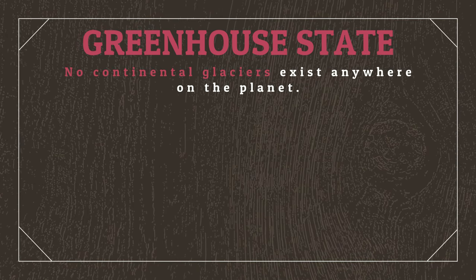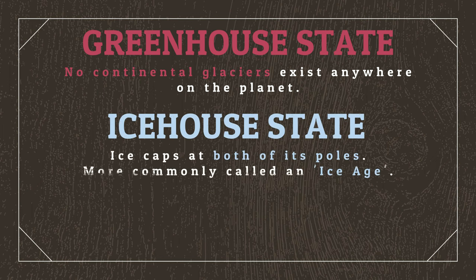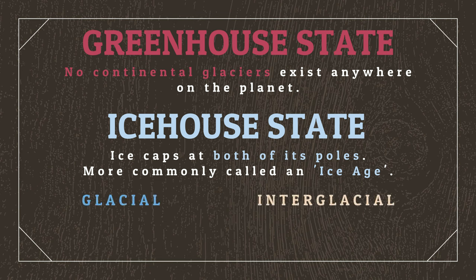While ice caps are reasonably well known to us, they weren't always present on Earth and aren't necessary for any other Earth-like planets either. Earth-like planets shift between two primary climate states: greenhouse and ice house. In short, greenhouse and ice house states refer to whether polar ice caps are present or not. While we view polar ice caps as normal, Earth has actually been in a greenhouse state for around 85% of its history, and we're currently in an ice house state. When a planet is in a greenhouse state, no continental glaciers exist anywhere on the planet, while a planet in an ice house state has ice caps at both of its poles. More commonly, we refer to an ice house state as an ice age, which is then further divided into periods that are glacial and interglacial, which simply refers to whether ice sheets are growing or diminishing.